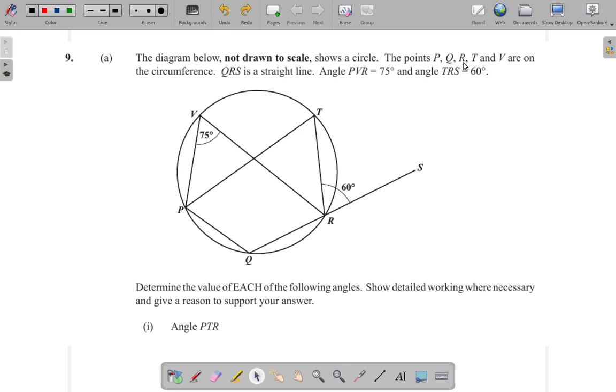The points P, Q, R, T, and V are on the circumference.